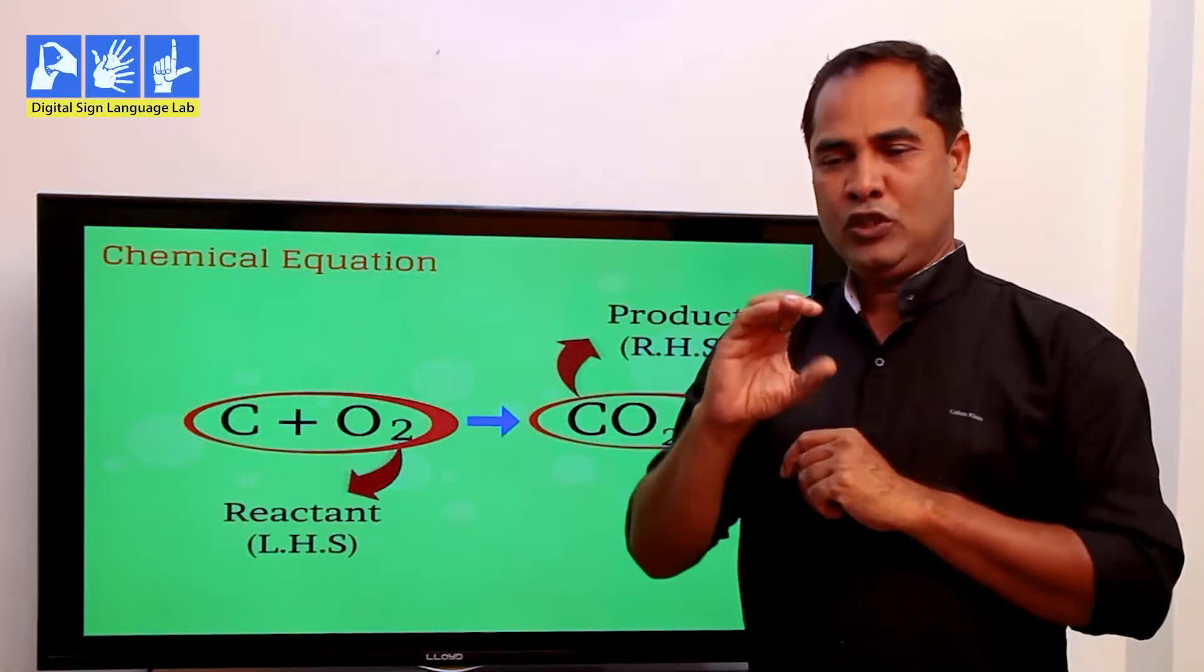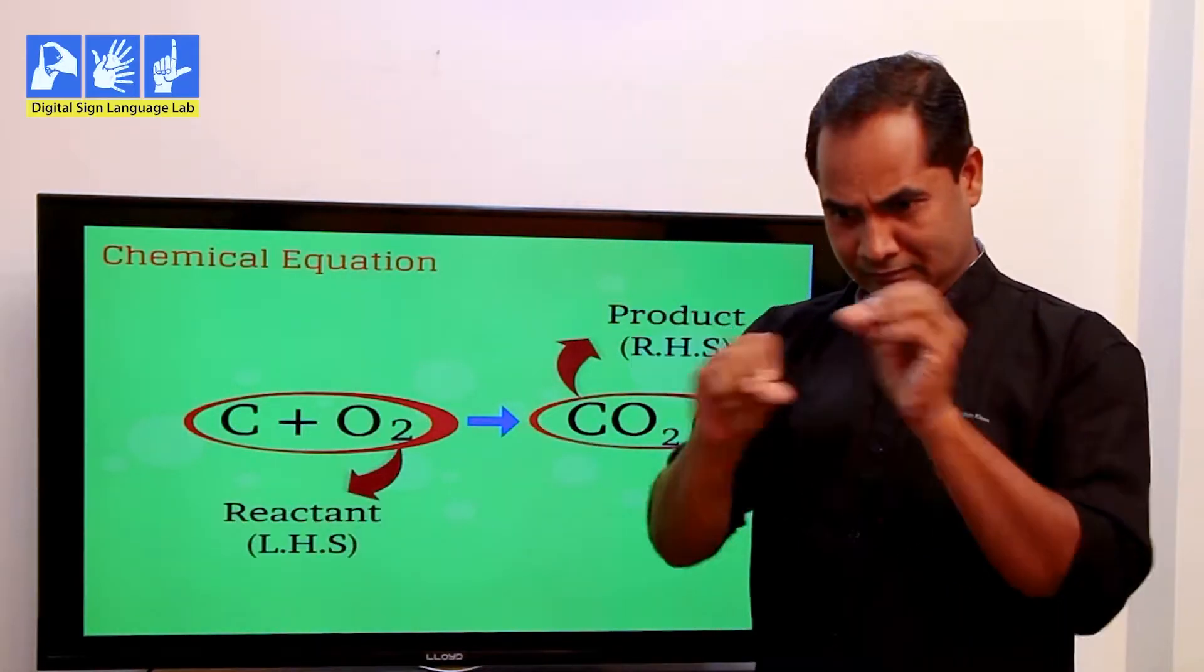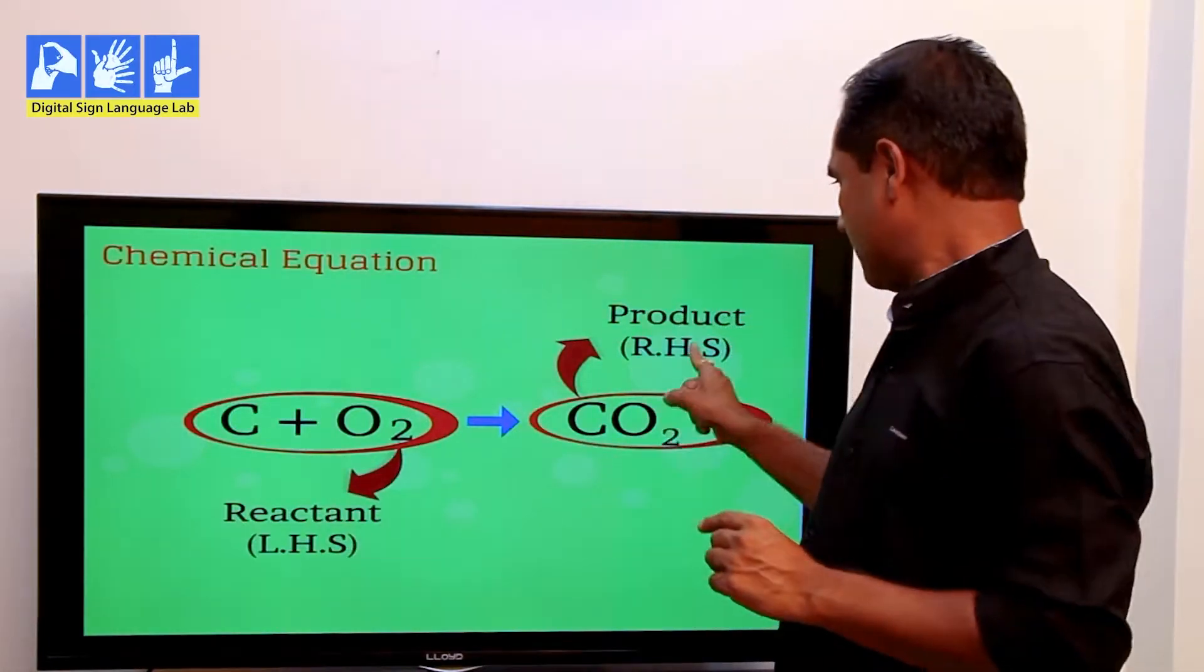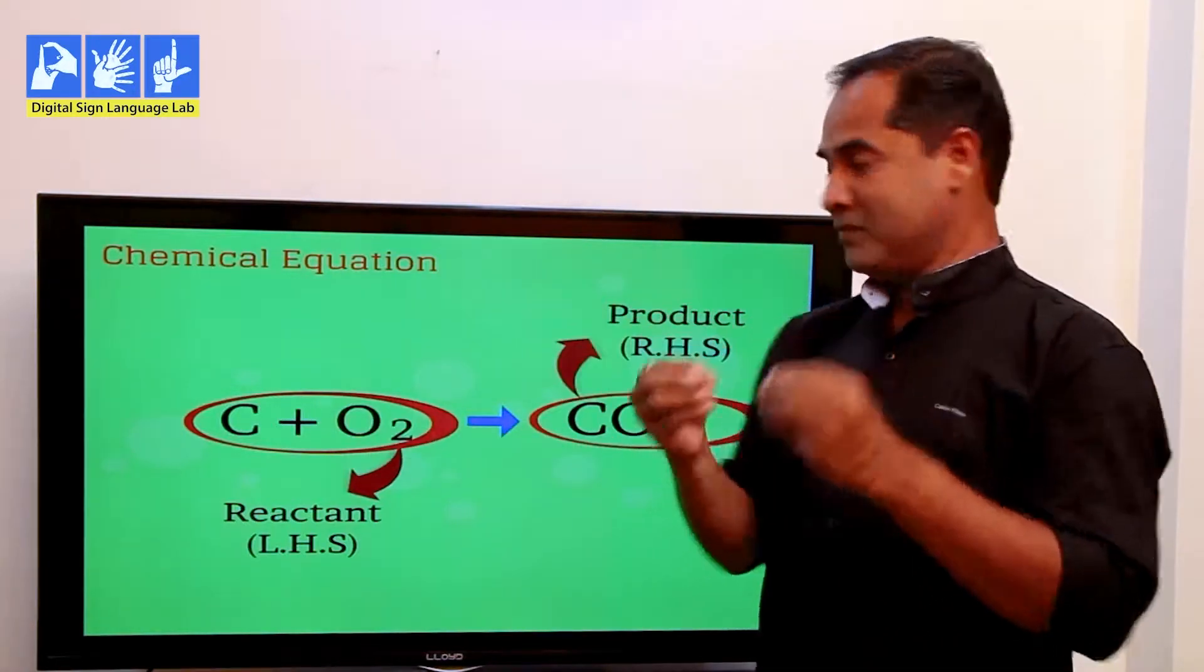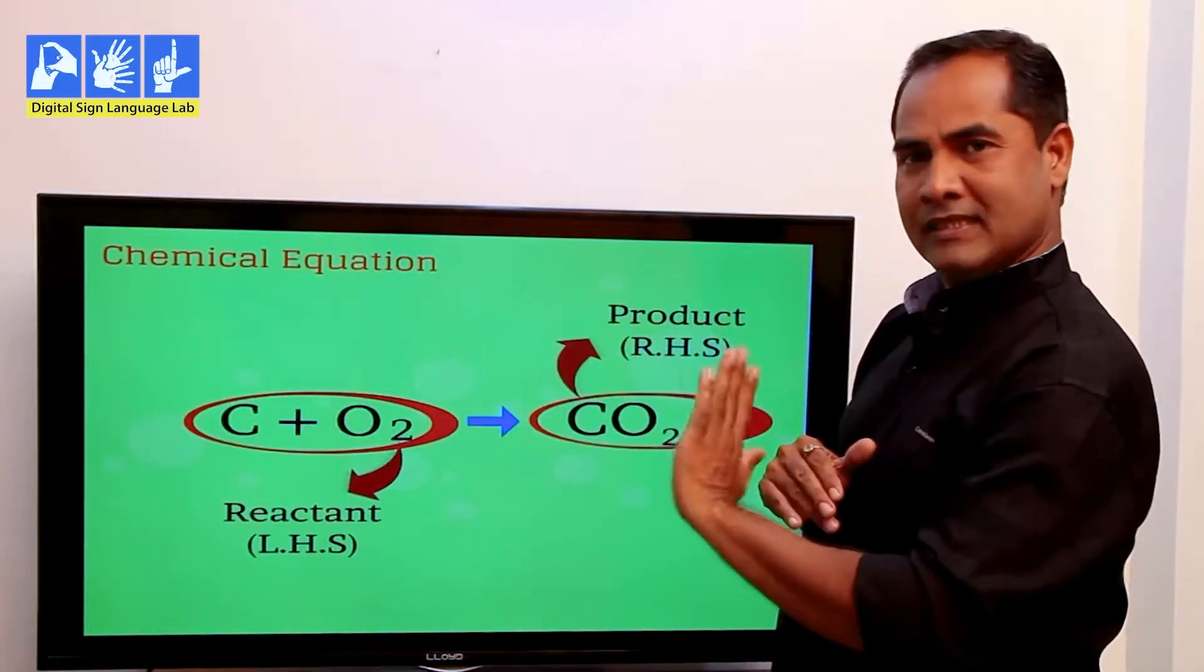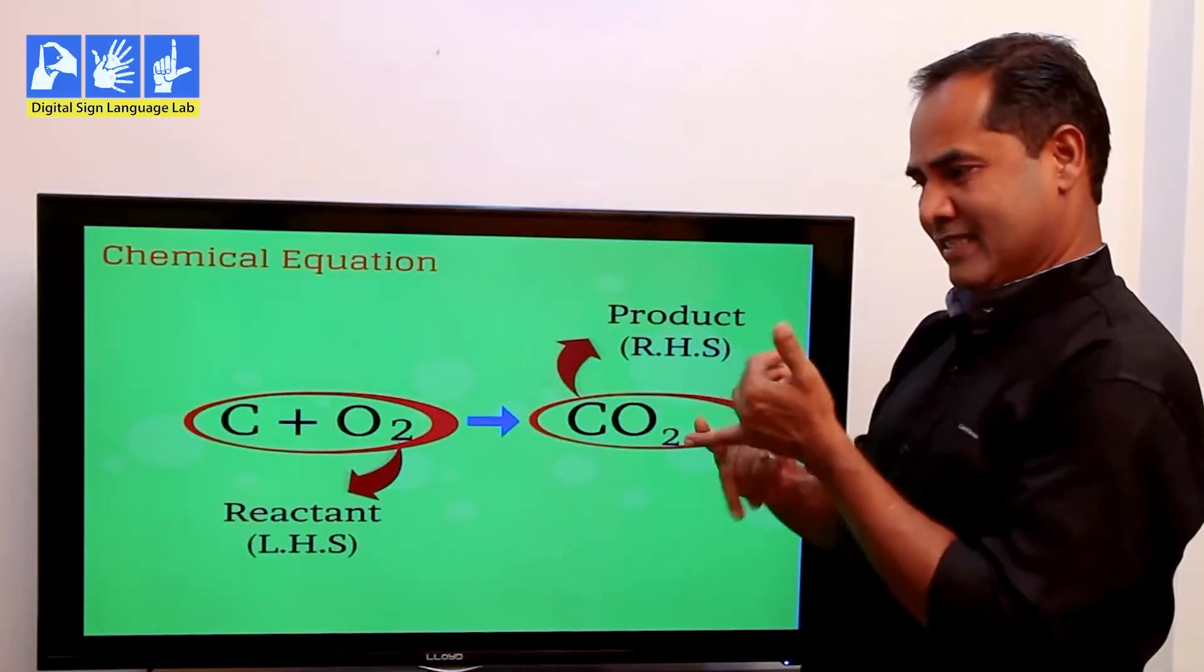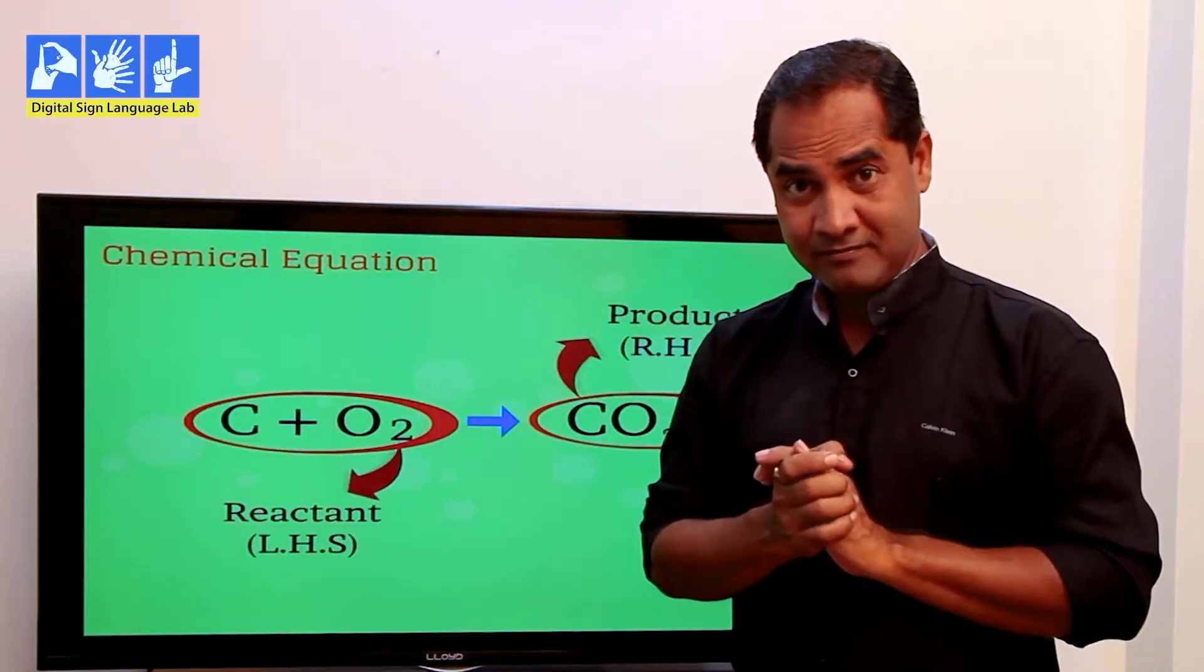So carbon and oxygen combine to give you carbon dioxide. Carbon and oxygen here are the reactants and carbon dioxide is the product. The reactants are reacting to give you the products. The reactants are put on the left-hand side and the products are put on the right-hand side.